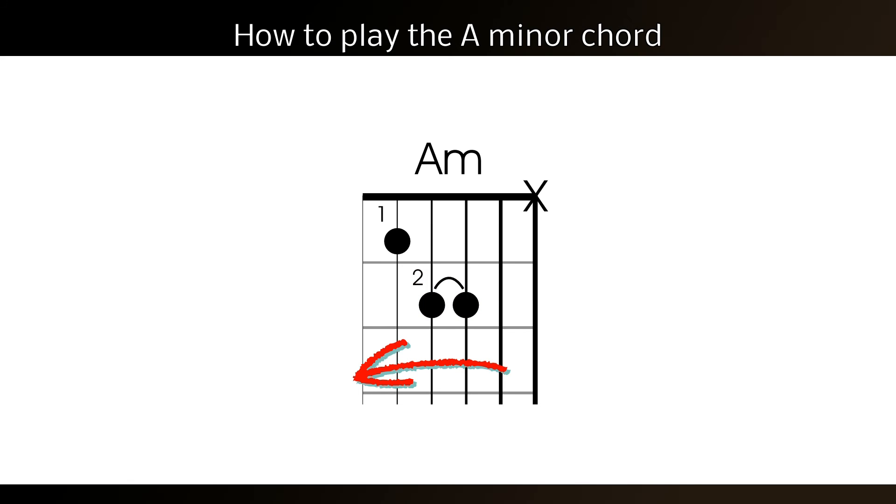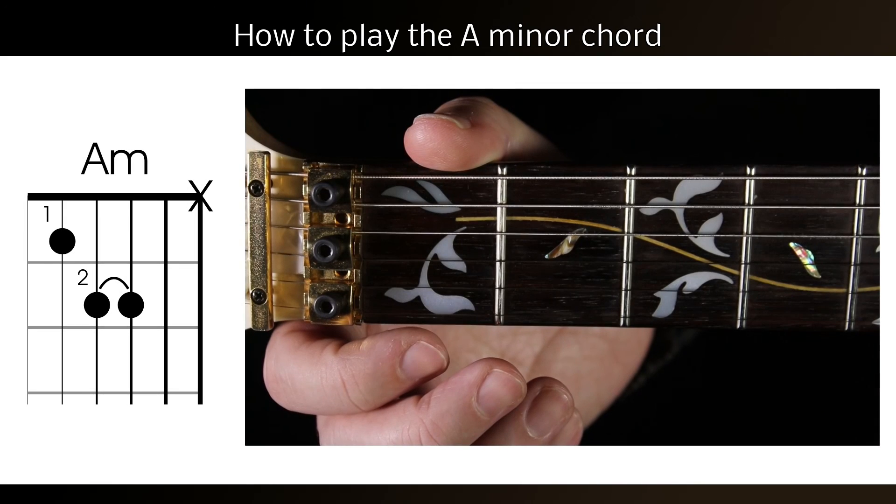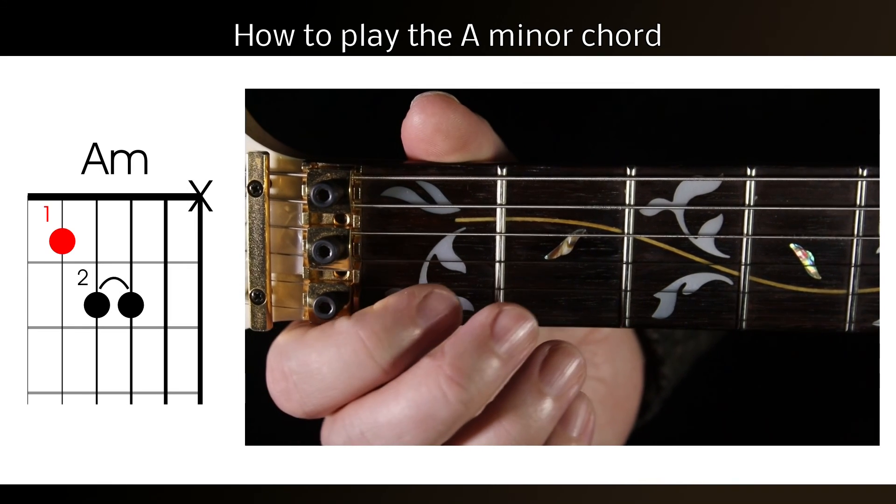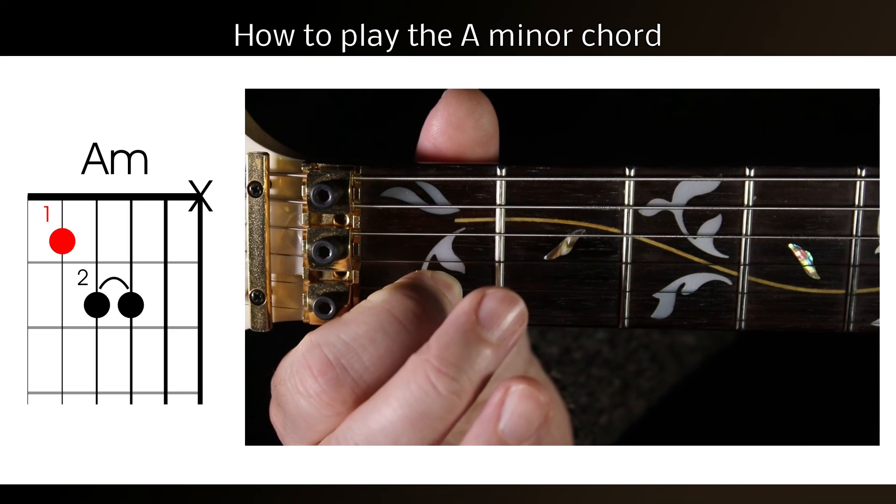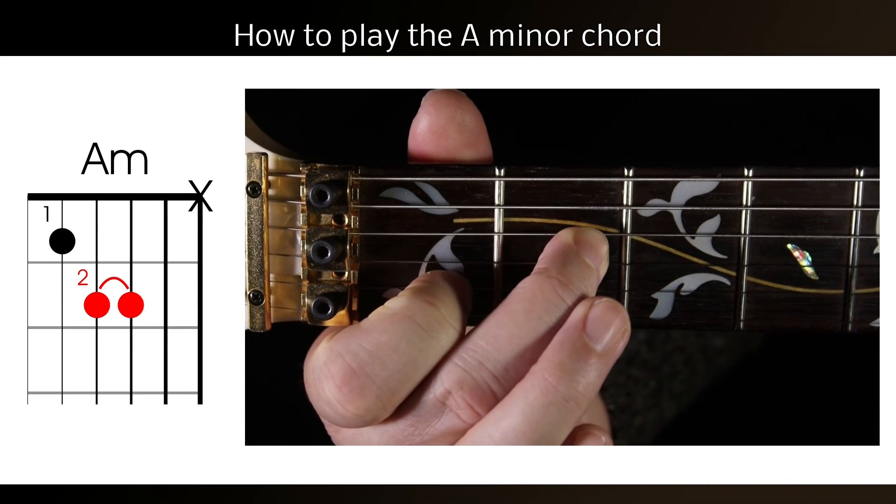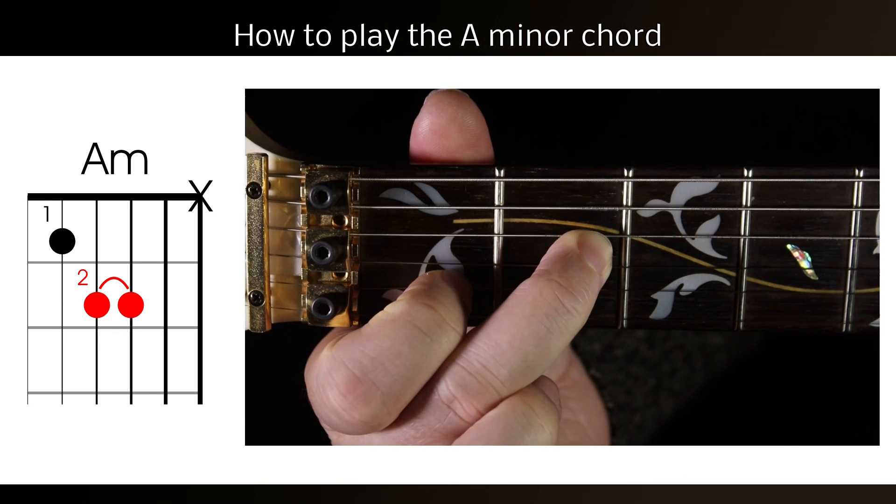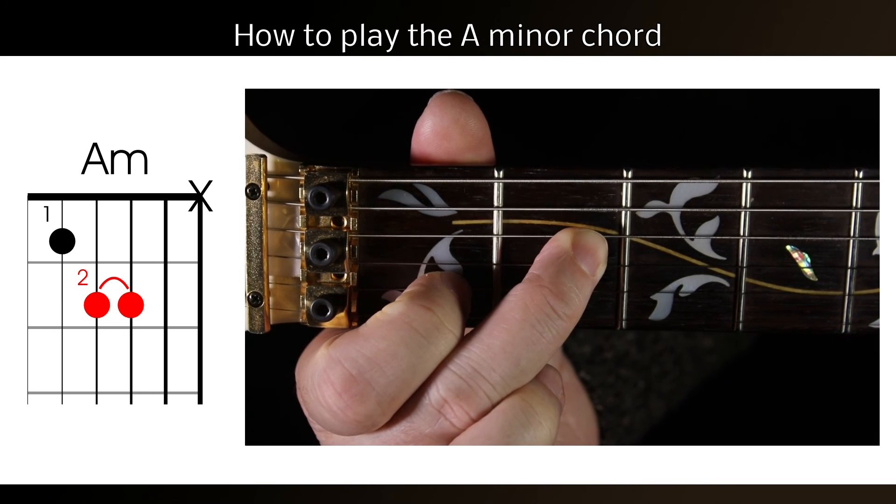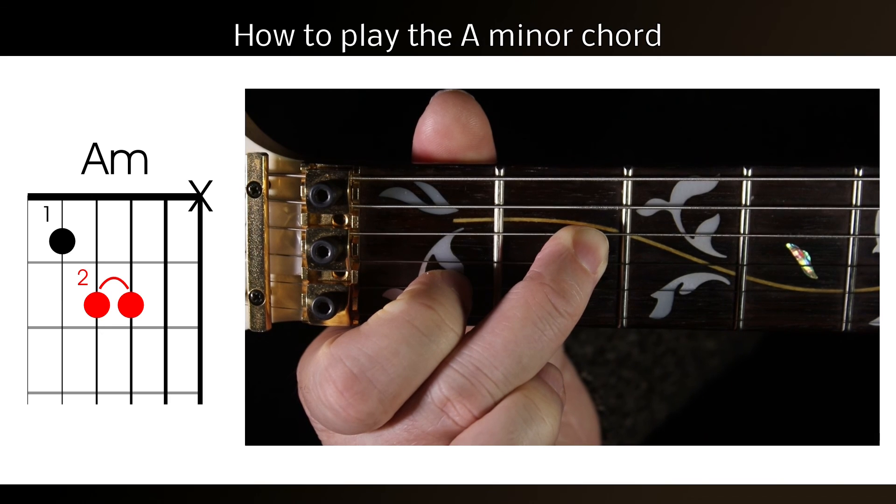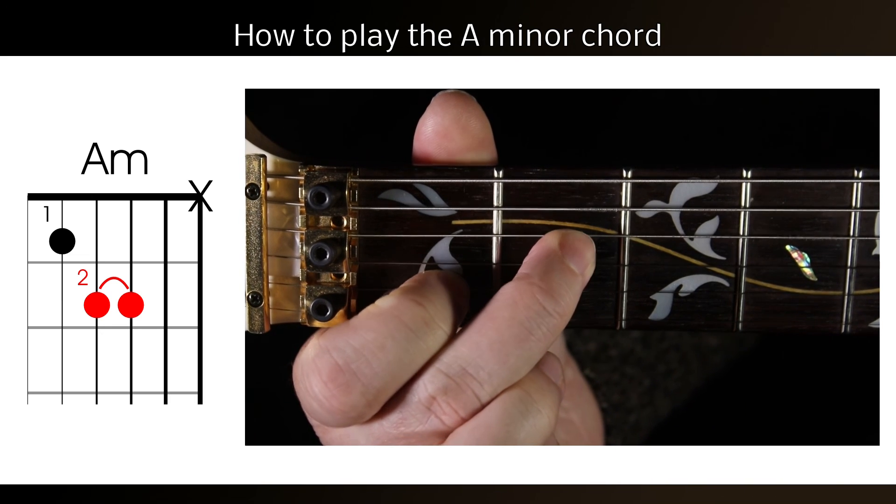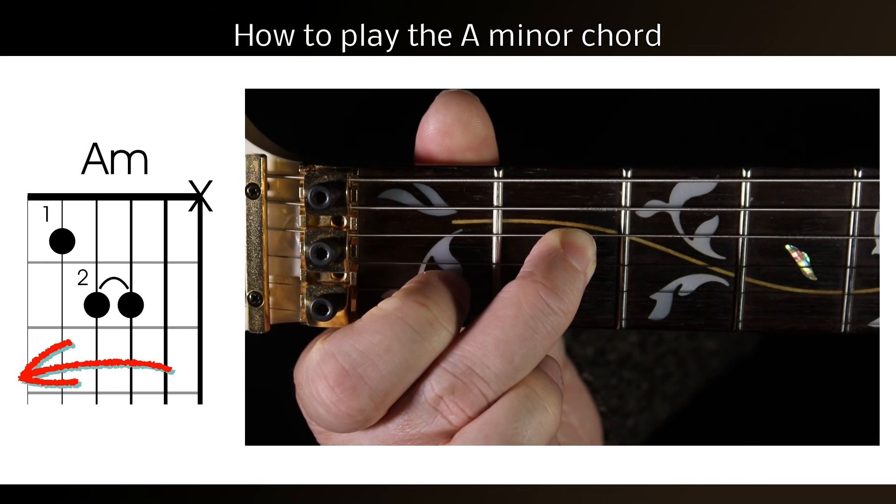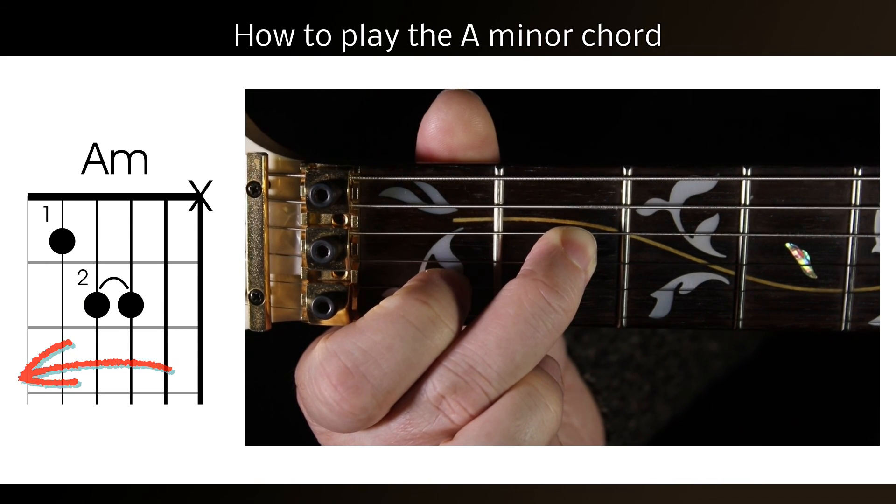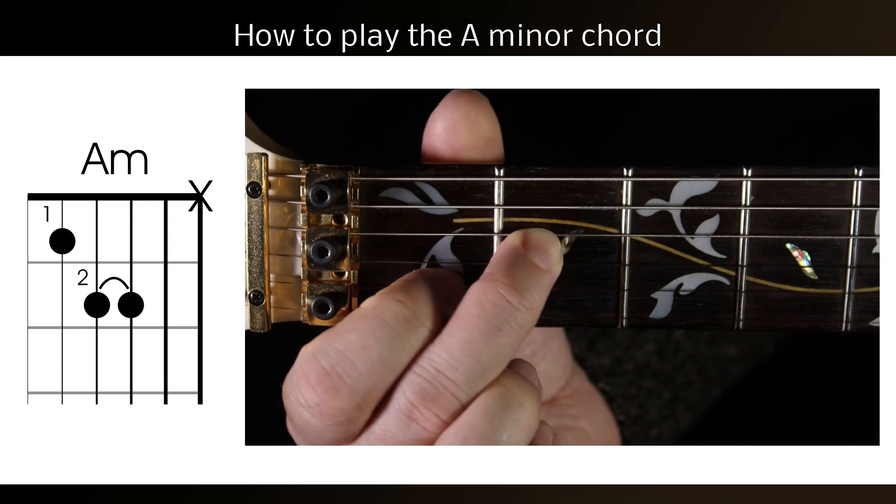Let's see that on a guitar. Firstly, place the first finger on the first fret of the B string. Then press the second finger on the second fret of both the D string and the G string. See how it's covering both strings. Now strum the chord.